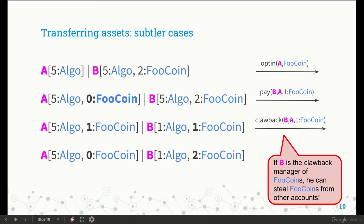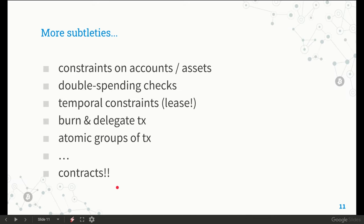Provided that B is the clawback manager of FooCoin, B can take back this FooCoin from A's account and add it to his own account. Besides the corner cases we have seen in the previous slides, Algorand has many other quirks that overall make it difficult to precisely understand the behavior of transactions.